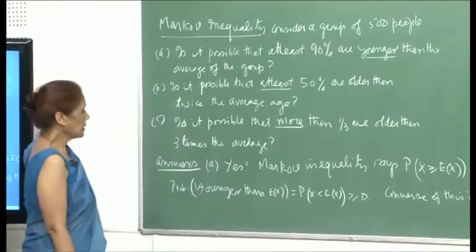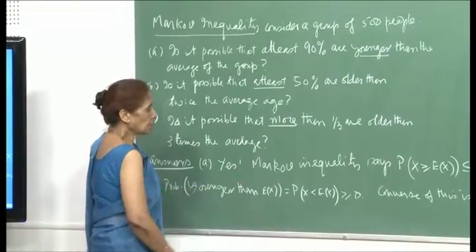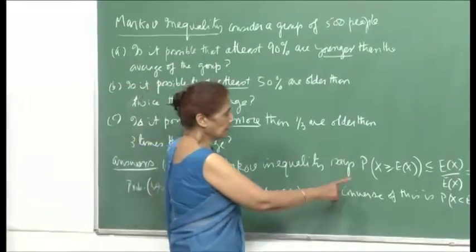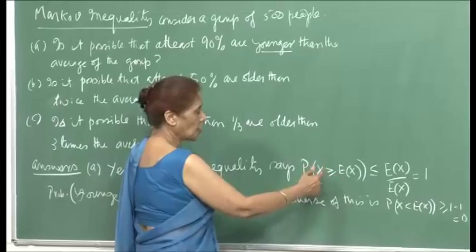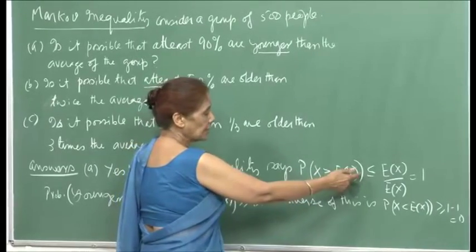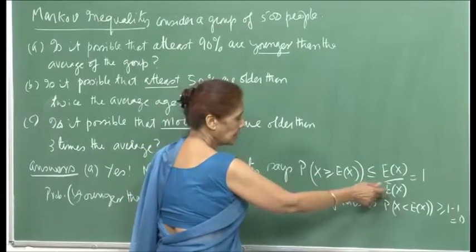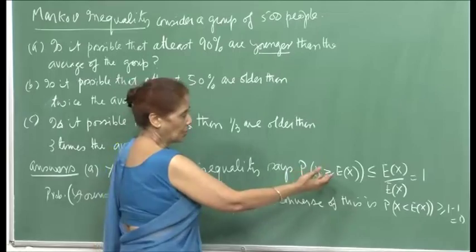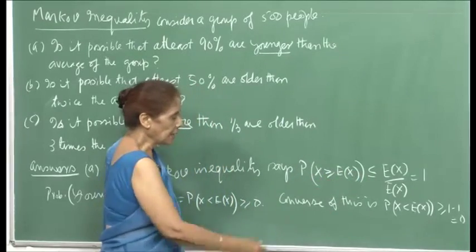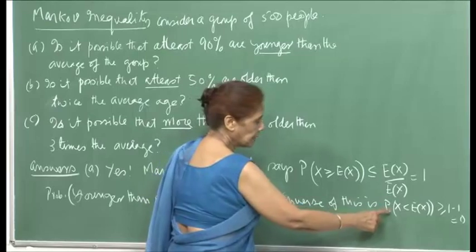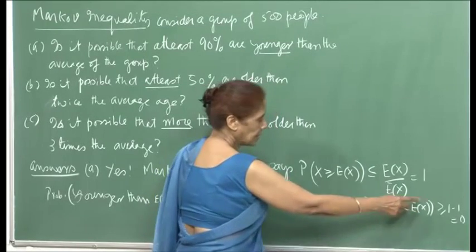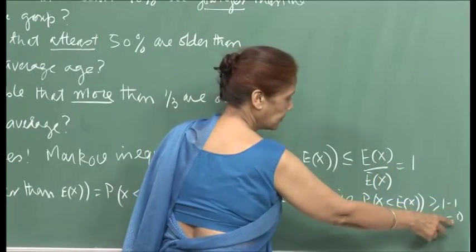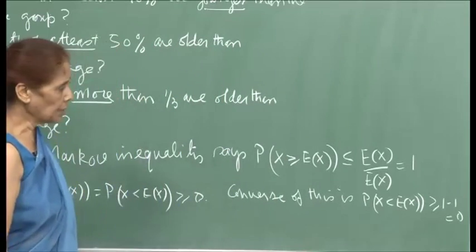For the first part, the answer is yes. But if you try to get the bound from the Markov inequality, the inequality says that for x greater than or equal to E[X], probability that x ≥ E[X] is less than or equal to E[X]/E[X], which equals 1. So that is no bound, because all probabilities are less than or equal to 1. The converse would be probability x < E[X] ≥ 0, which again gives no information.